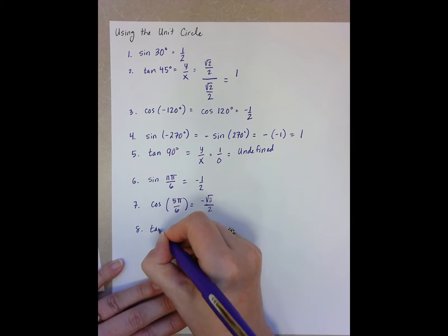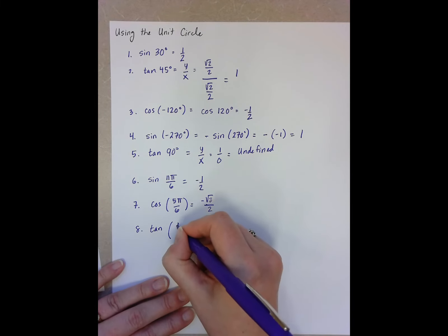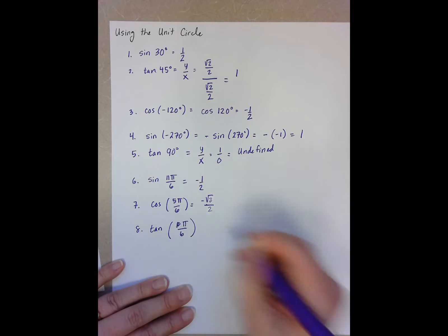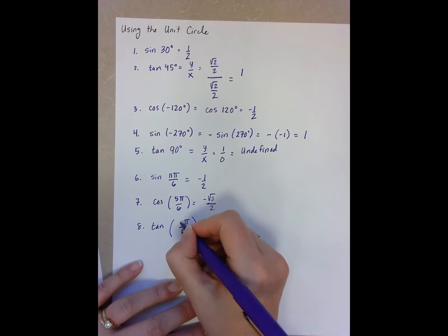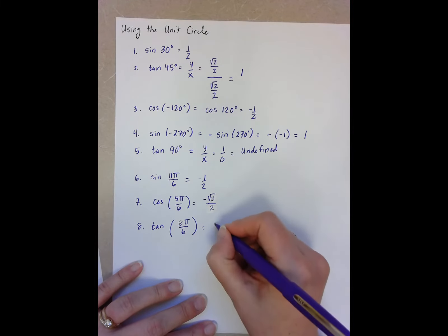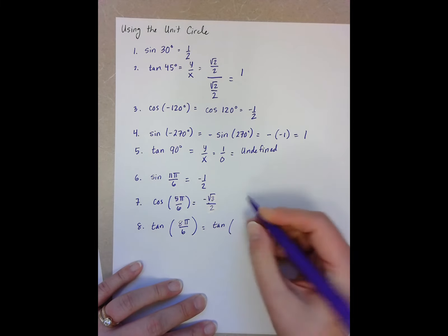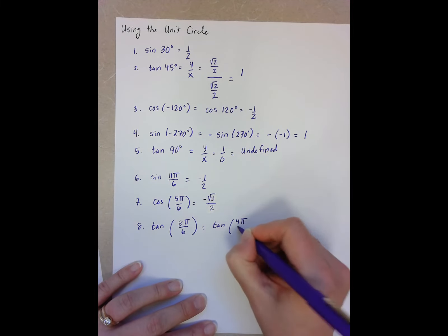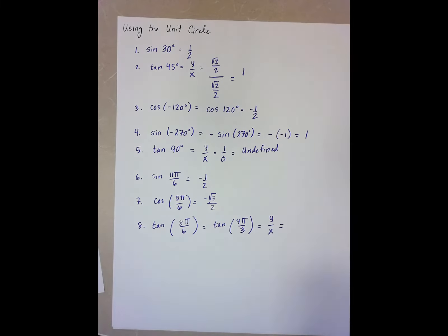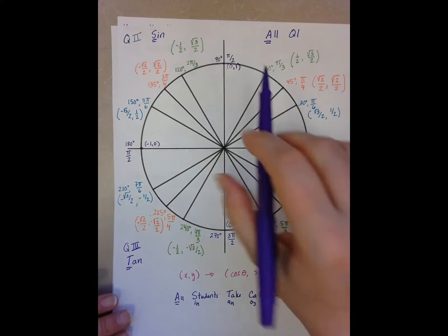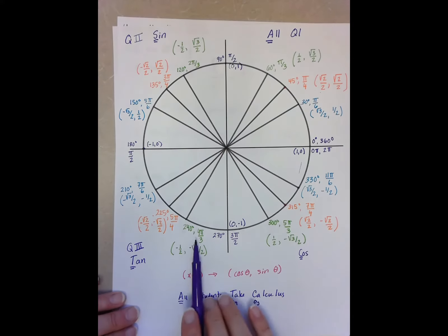Example 8, tan of 8 pi over 6. The first thing I'm going to want to do here is recognize that 8 pi over 6 is the same as 4 pi over 3. And I know that this is y over x, so I'm looking for 4 pi over 3. 4 pi over 3,